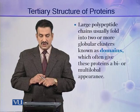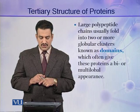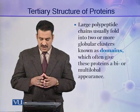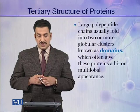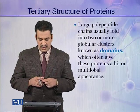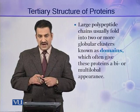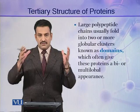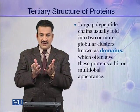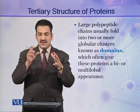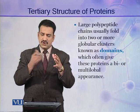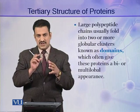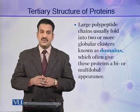Some very large polypeptide chains usually fold into two or more globular clusters, and these clusters are called domains. The presence of these domains often gives proteins a bi- or multi-lobal appearance. In a fully folded protein molecule, there may be two or more smaller clusters of polypeptide chains, and these smaller clusters are called domains.